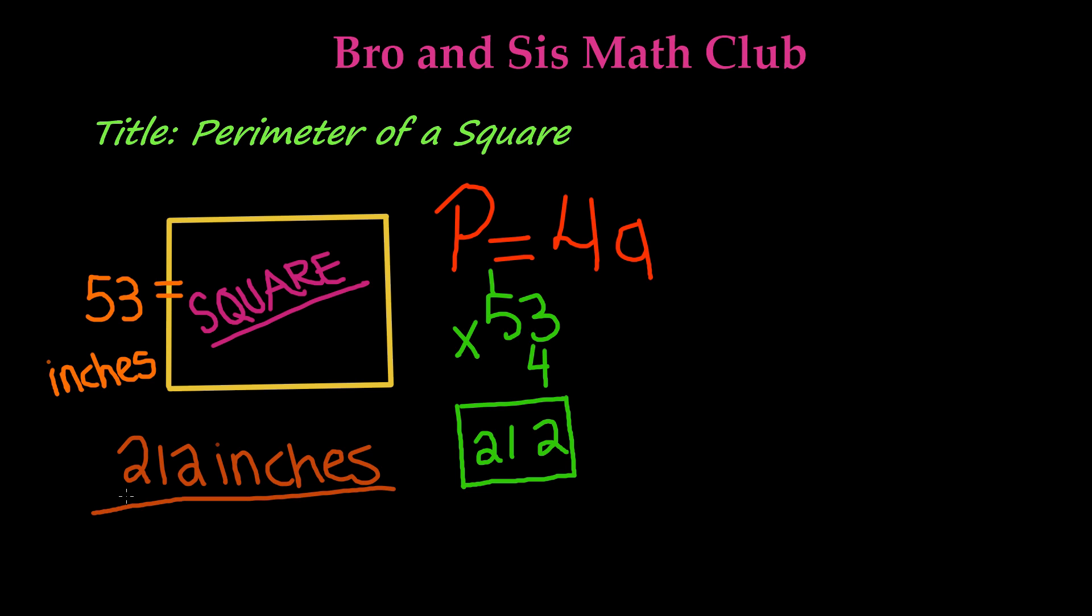Alright, that's all I have for this video. I hope you guys learned how to find the perimeter of a square. Remember, use the shortcut: just multiply the side measurement by 4. Thanks for watching and we'll see you in our next video. Bye!